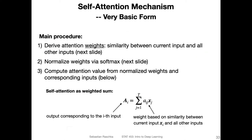Coming back to the self-attention mechanism. Before I talk about the version used in transformers, I want to cover a very basic form just to introduce the topic slowly. In this basic form, we can think of it as a procedure consisting of three steps. The first step is deriving the attention weights, which are a form of similarity or compatibility between a current input — one element in the sequence, you can think of it as a word in the sentence — and all other inputs. So it's the similarity between a given word and all the other words in the sentence.